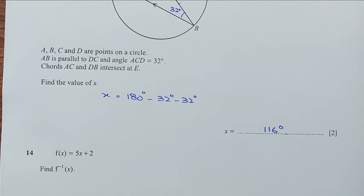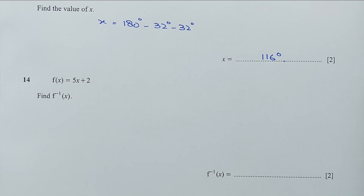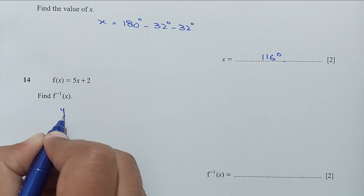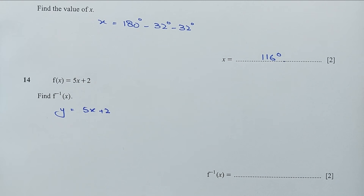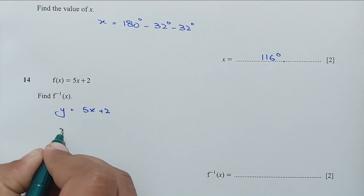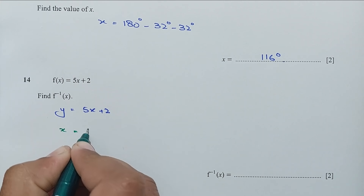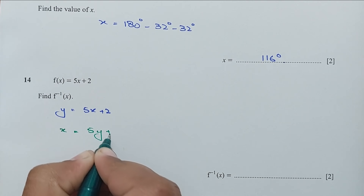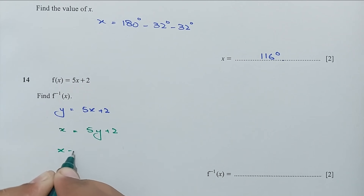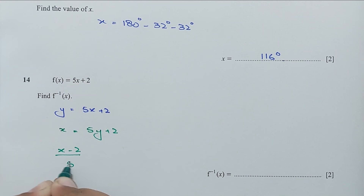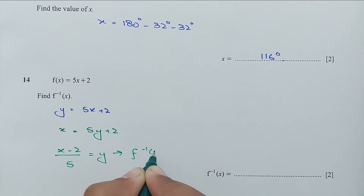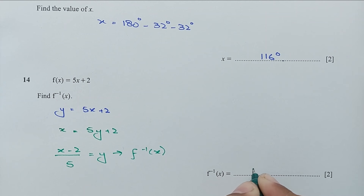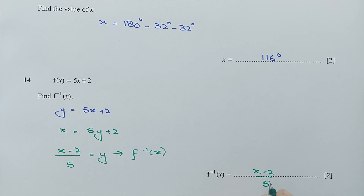Question number 14: find the inverse function f⁻¹(x). Let y = f(x), then switching variables: x = 5y + 2. Solving for y: y = (x − 2)/5. So f⁻¹(x) = (x − 2)/5.